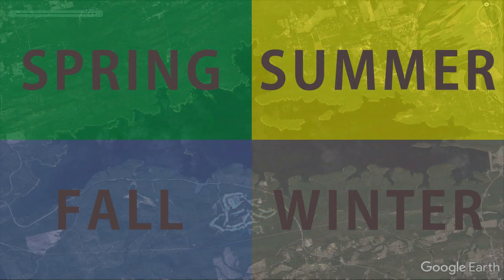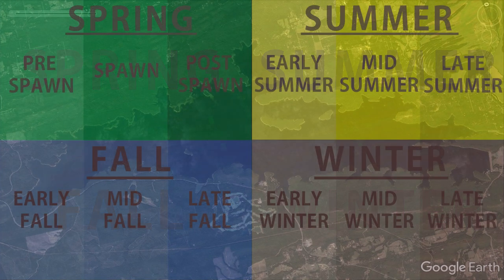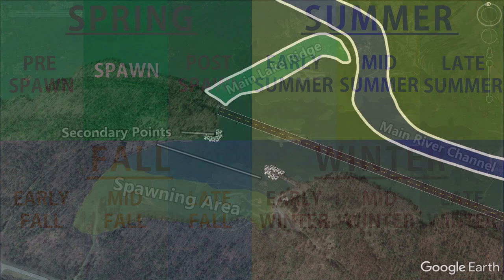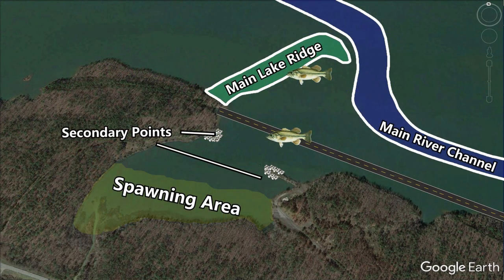In this video I'm going to be continuing my series where I break down the seasonal patterns of bass fishing. In my last video I explained that fishermen break down a year into spring, summer, fall, and winter, and then further subdivide these seasons into shorter seasons. This time around we're going to be looking at the spawn.